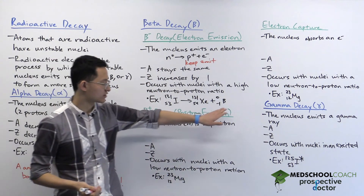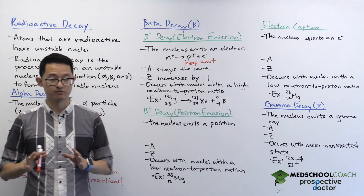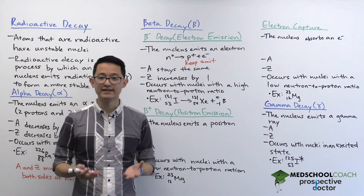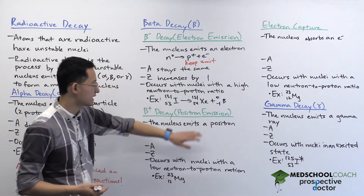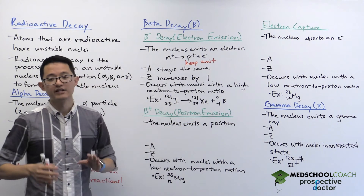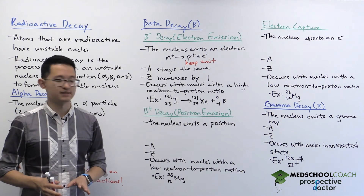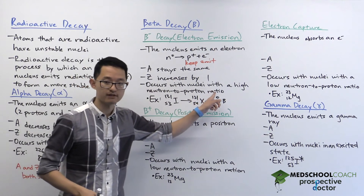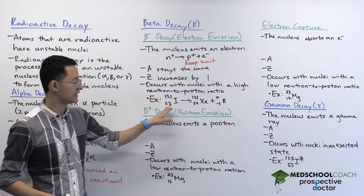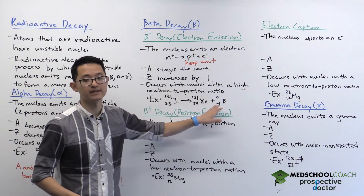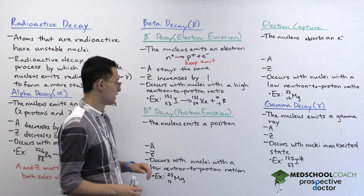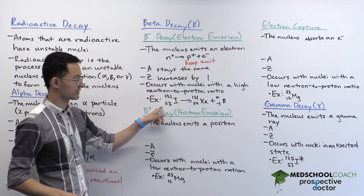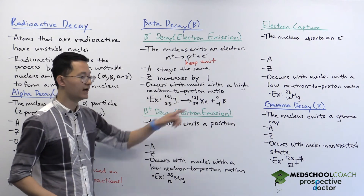In our notation for the electron, we have a mass number of zero, which makes sense, but the atomic number is minus one. There's no such thing as a negative number of protons, so the minus one is there just for balancing purposes. The mass number: 131 equals 131 plus zero. The atomic number: 53 equals 54 plus negative one. That works. The identity of our element changed because our atomic number increased from 53 to 54.